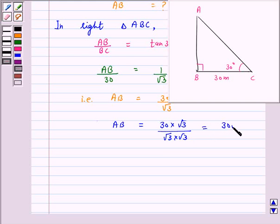And this is equal to 30 root 3 upon 3. On cancellation we have AB is equal to 10 root 3.